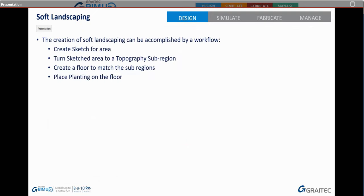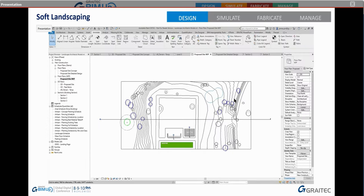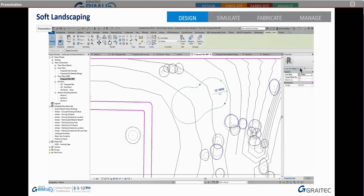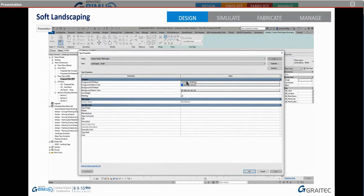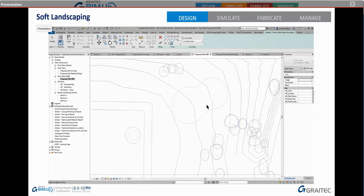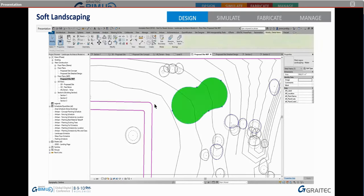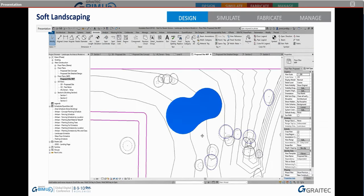The creation of soft landscaping follows a simple workflow, very similar to hard landscaping: create a sketch area, turn it into a graphical sub-region, create a floor to match, and then place planting on it if it's a planting bed. I've created a sketch with a blue line for water — I'm putting a water feature in here, a pond. Early in the design, I might just put a fill pattern in — a solid blue pattern — to give a graphical representation. This doesn't show in 3D, but it provides a concept indicator early doors.